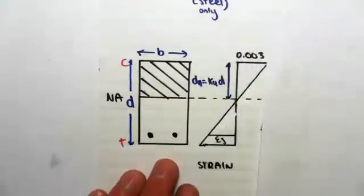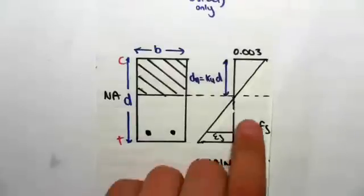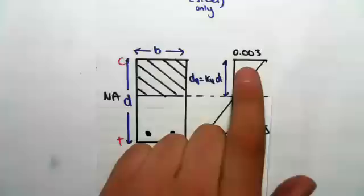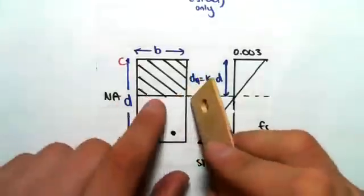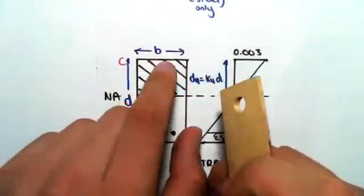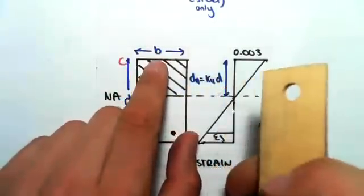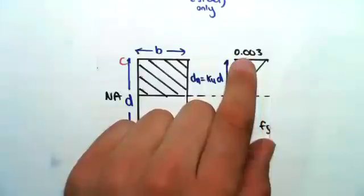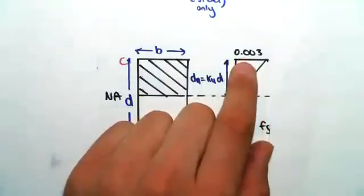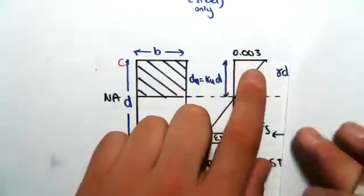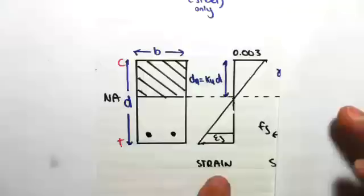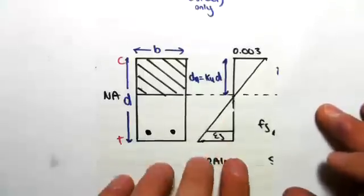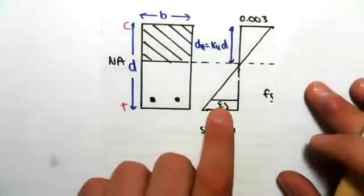Now, as I said, we start off with strain. So the code's going to give us a particular value of maximum strain, and we put that in the extreme compressive fiber. So extreme compressive fiber means as far away from the neutral axis as possible. This edge there is the extreme compressive fiber. The code's going to give us a particular value of strain, which is the maximum. We can then draw the strain diagram, which is just linear because the steel and concrete behave compositely.